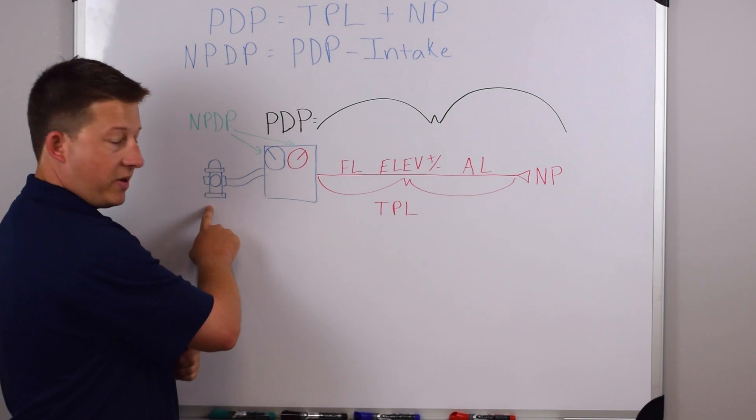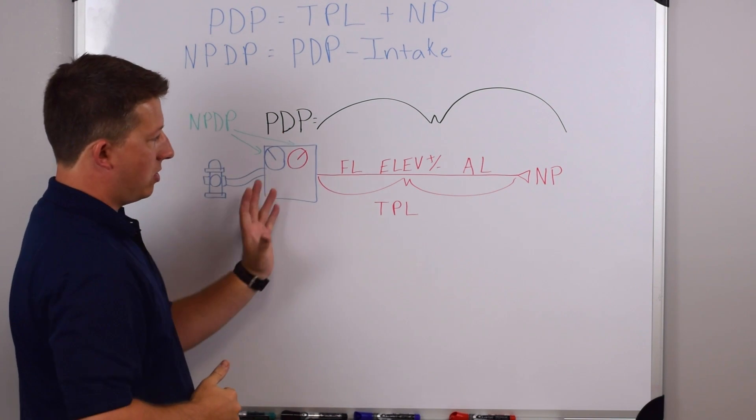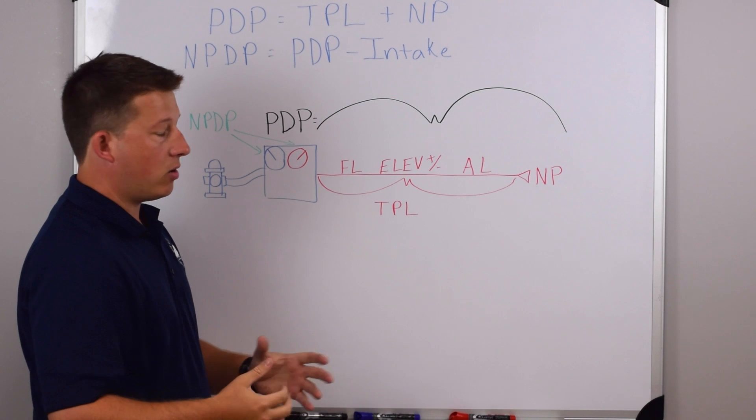What we have drawn is a blue fire hydrant to indicate incoming water. The blue side of this is going to be incoming water. The red side of this is going to be outgoing water.